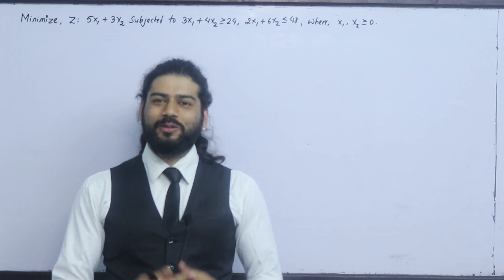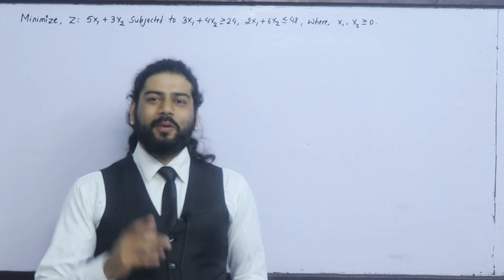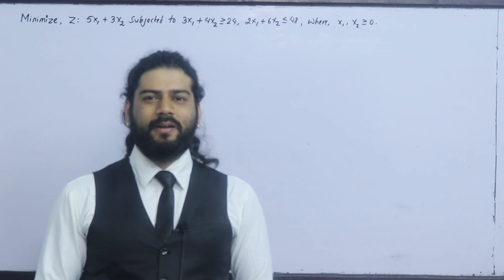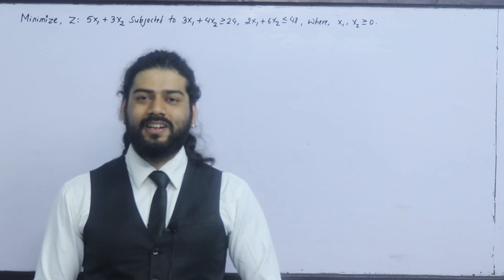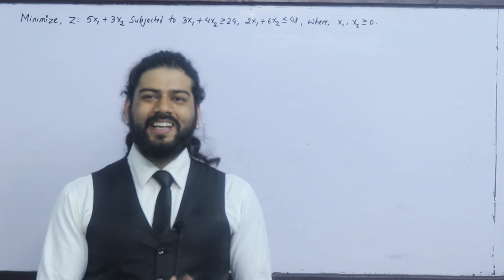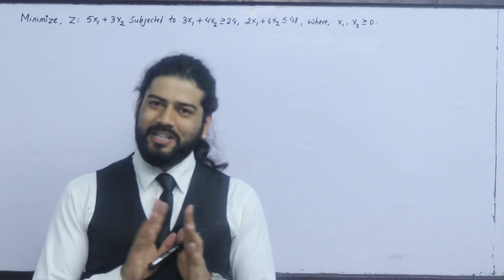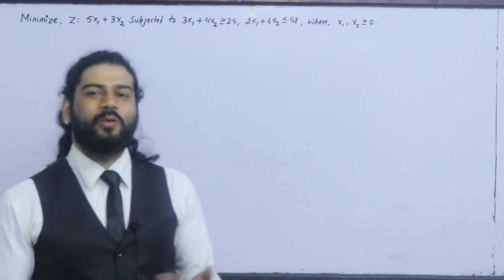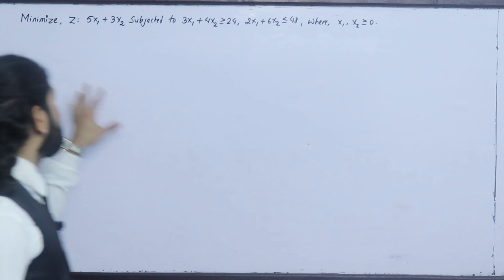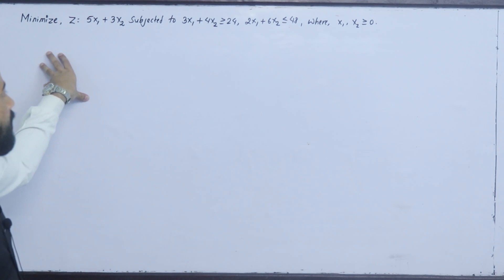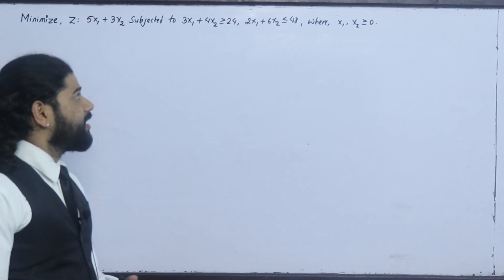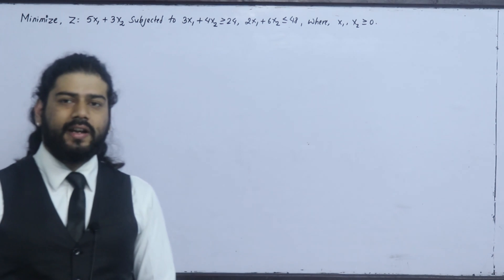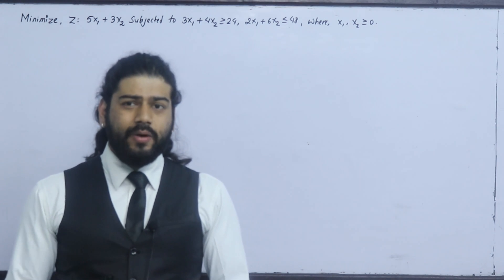In the previous class, we solved maximization questions. Now, I will ask you to minimize. The maximization and minimization are the same approach. The problem constraints are: x1 plus 4x2 is greater than or equal to 24, and 2x1 plus 6x2 is less than or equal to 48, where x1 and x2 are greater than or equal to 0. This is the basic question for minimization.